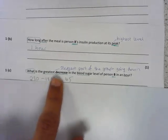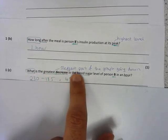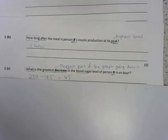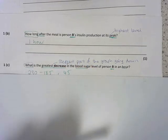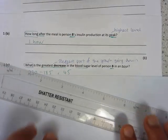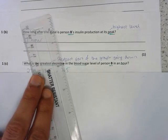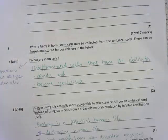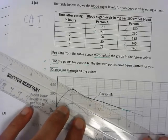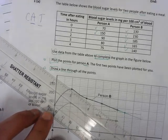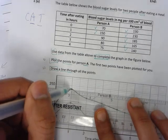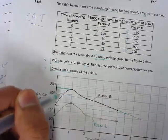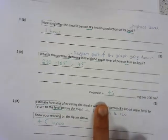1c is asking us what the greatest decrease in the blood sugar level of person B in an hour. So you're going to look at every hour and think about where the graph is the steepest going down. So a steep graph, a line, wouldn't be like this, but the one that looks closest to this going down at the steepest. Where is that for person B? Well it seems to be the case that the steepest part for person B when it's going down is here, between these two points. So if we were to read these two points, I should really use my ruler, or I can just look at the table for hours 1 and 2, and I can do my calculation by subtracting 185 from 230 to get 45.